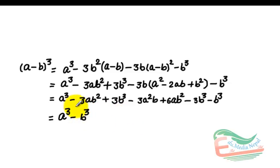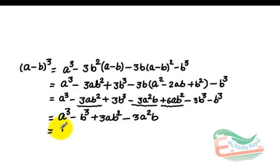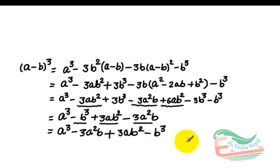And here, minus 3ab square and plus 6ab square are like terms, so their value is plus 3ab square. Next, there is one more term, minus 3ab square, which equals a cube minus 3ab square, plus 3ab square, and finally minus b cube — which is the required formula of a minus b whole cube.